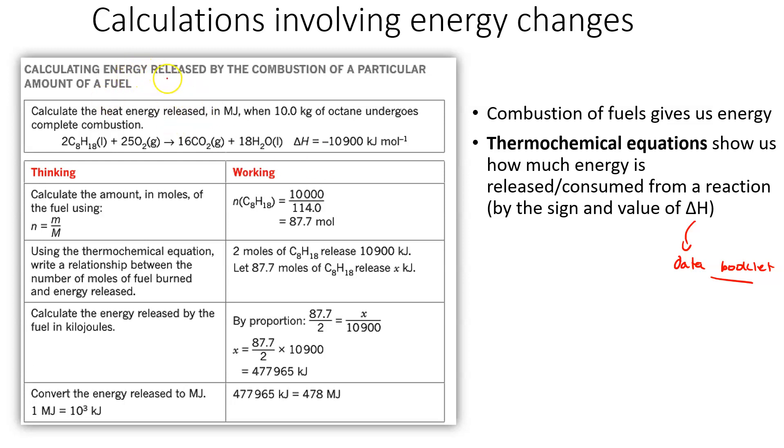In this example, we're going to be calculating energy released from the combustion of a fuel, and we're going to be looking at a fully complete combustion equation. And we've been given our delta H value along with it, so it's a thermochemical equation. We've been asked to calculate the heat energy released in megajoules when 10 kilograms of octane undergoes complete combustion. So we're going to be dealing with a very big number here, remembering that our delta H is in kilojoules, so there is going to be a conversion required here.